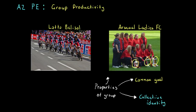Another property we'd expect from any successful group is that communication between group members is excellent. That communication could be on a technical level — like calling out pace changes or positions in a cycling race — but it could also be on a social level, where people just like being together and there's a mutual interactivity and attraction between people.